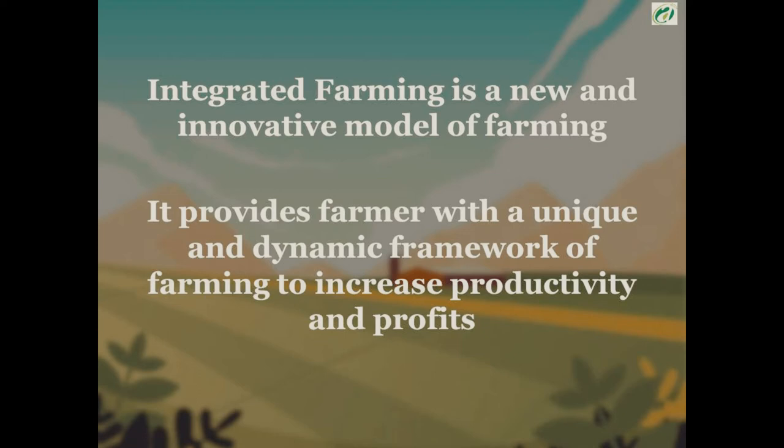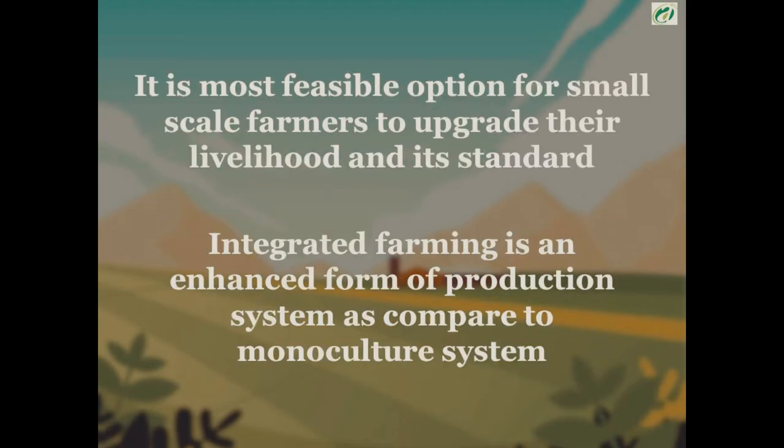What is integrated farming? Integrated farming is a new and innovative form of farming — a model in which two or three components of agriculture are raised or reared on the same land so that resources are used efficiently. It provides farmers with a unique and dynamic framework to increase productivity, which ultimately increases profits. It is said to be the most feasible option for small-scale farmers to upgrade their livelihood and its standards.